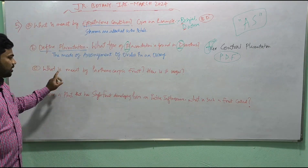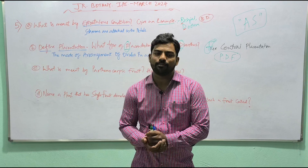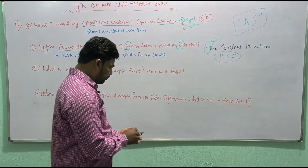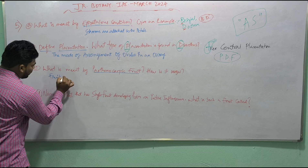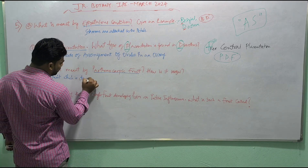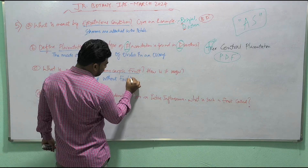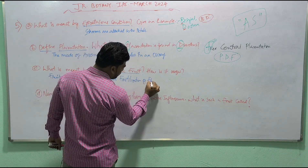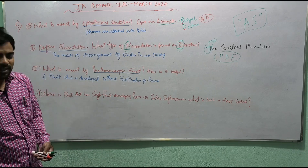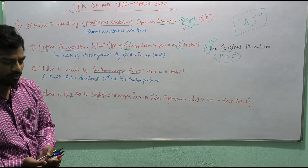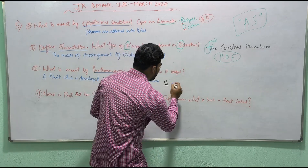Next: 'What is meant by parthenocarpic fruit?' Normally, a fruit develops after fertilization of the ovary. But a parthenocarpic fruit is a fruit which is developed without fertilization of the flower.